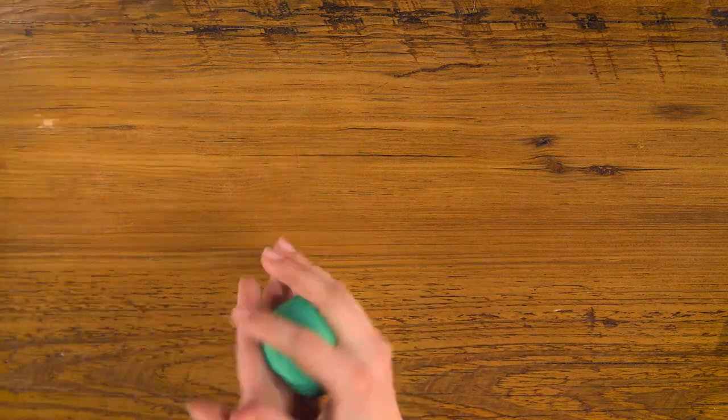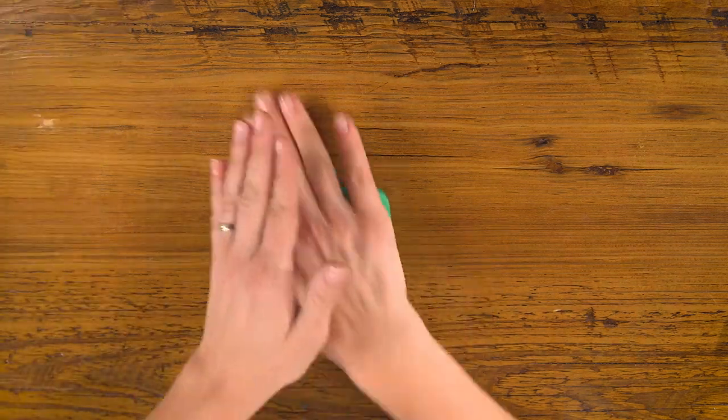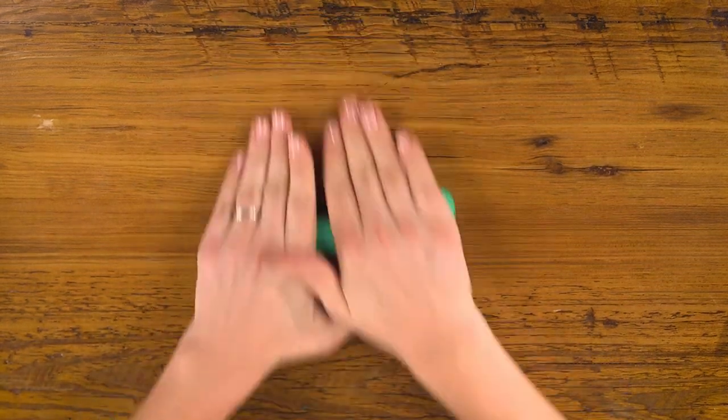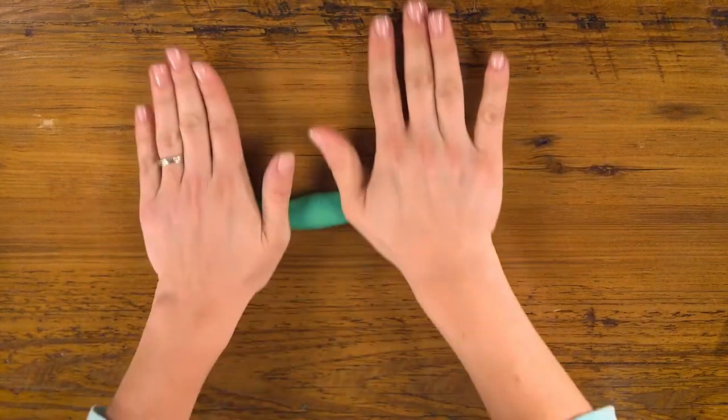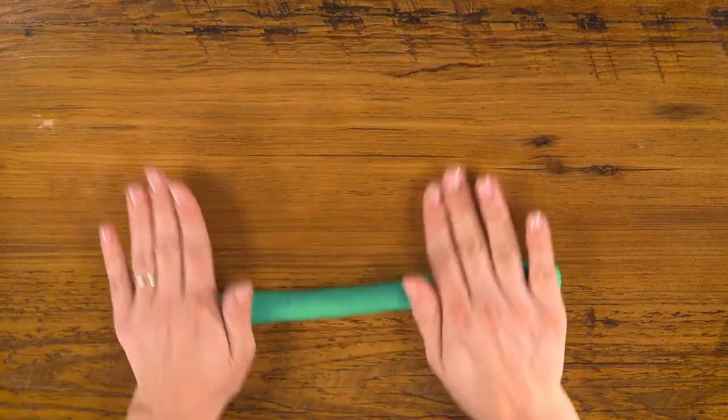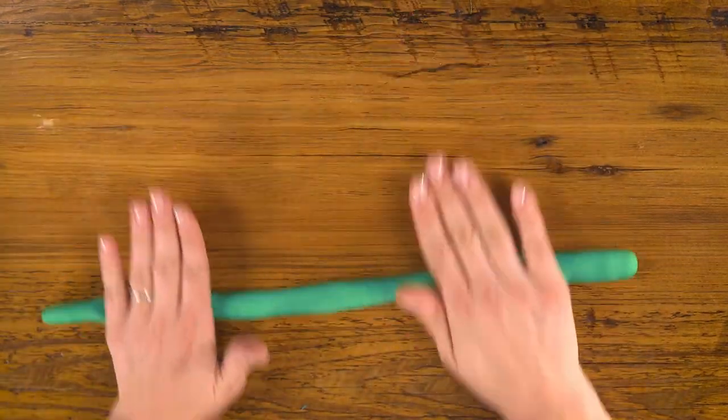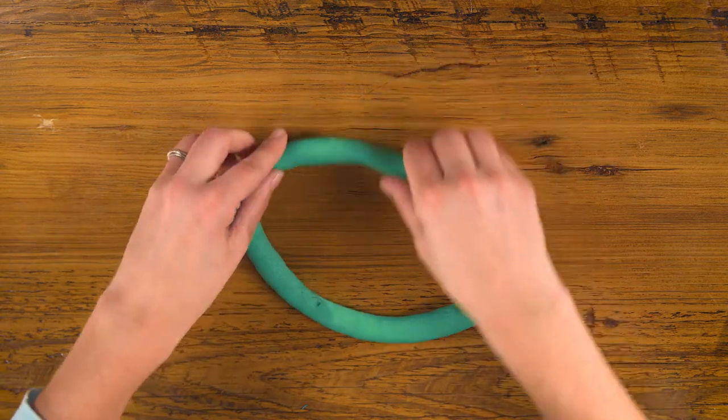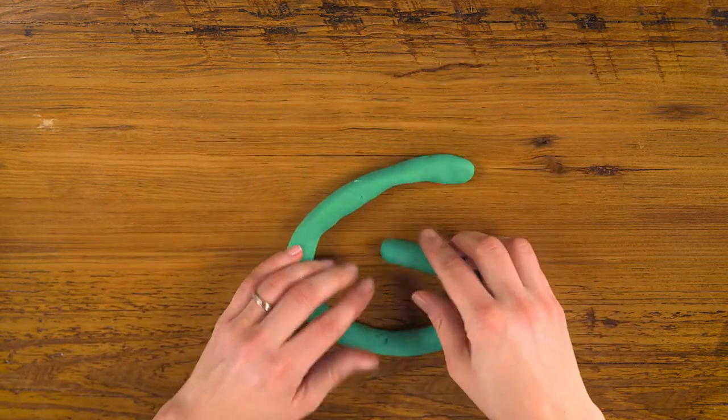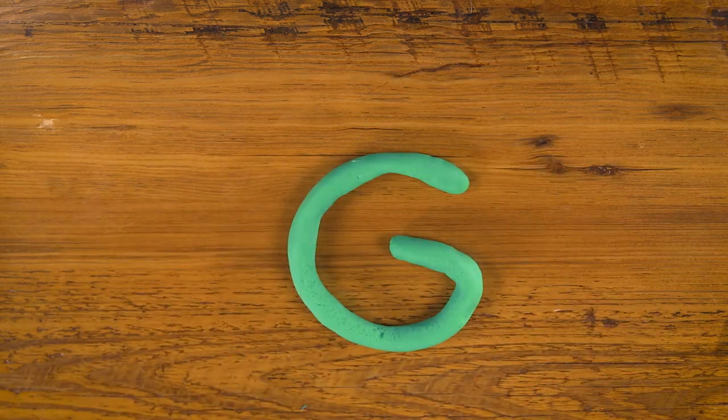For G, let's use green. I'll make a nice long rope again. Curve it up. Put the end in, like that. And there's your G.